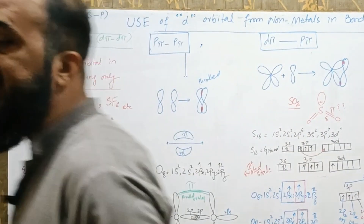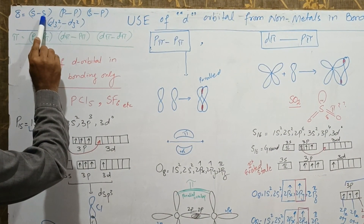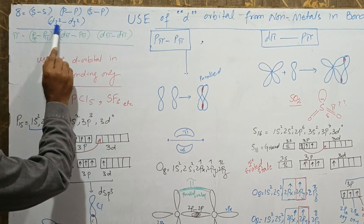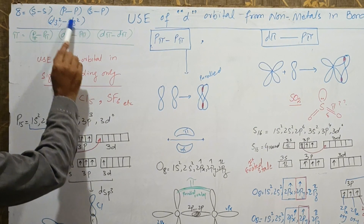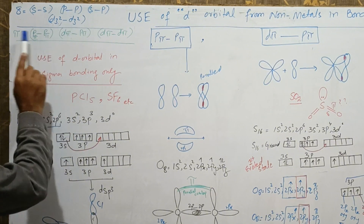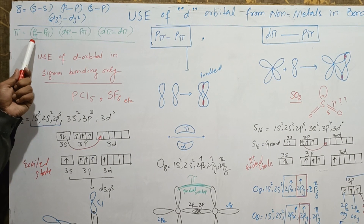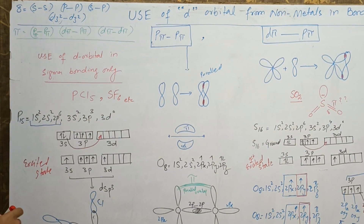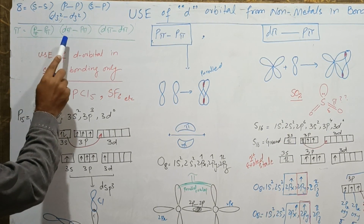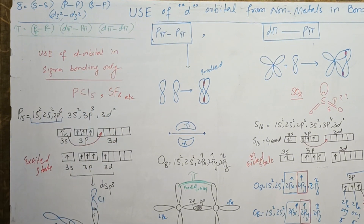First, let's see which types of overlap form sigma bonds: s-s linear overlap, p-p linear overlap, s-p linear overlap, and dz²-dz² linear overlap — all form sigma bonds. Pi bonds result from the parallel overlap of p orbitals of combining atoms, specifically called pπpπ parallel overlap, or dπpπ parallel overlap, or dπdπ parallel overlap.